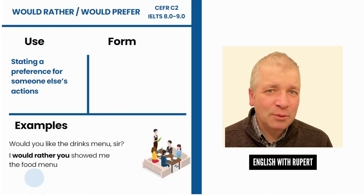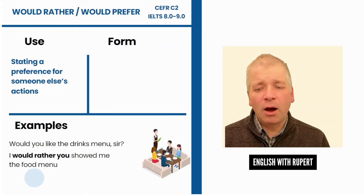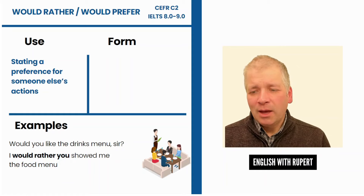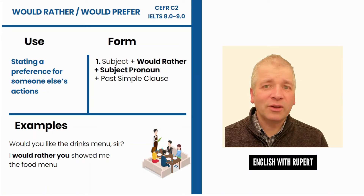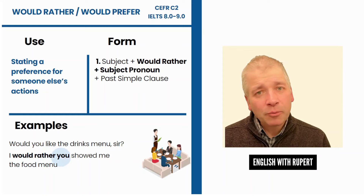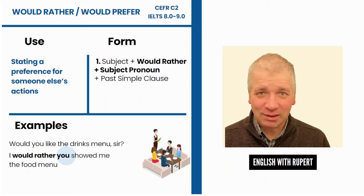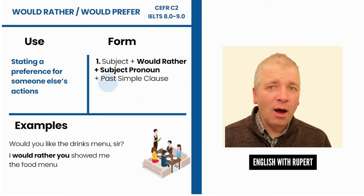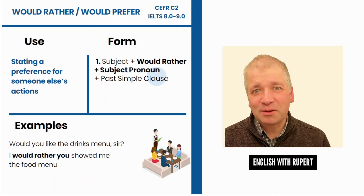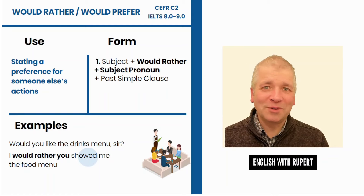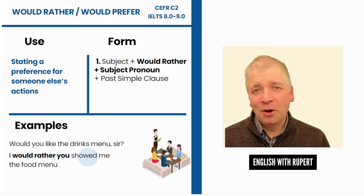Your preference is to see the food menu, but you want someone else to do it. The key thing is instead of just saying 'I would rather', you say 'I would rather you'. The form is: subject ('I') + 'would rather' + subject pronoun ('you' — the person you want to act) + past simple verb. So: 'I would rather you showed me' — 'showed' is the past of 'show'. Not the infinitive, not the present — the past simple.